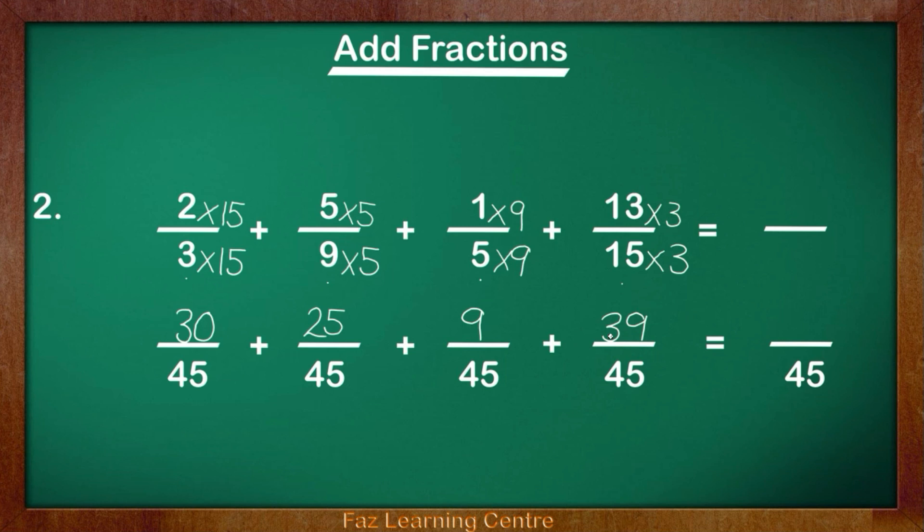We need to do a quick calculation to ensure that we have added these properly. So we can add 30 add 25 is 55. 55 add 9 will give us 64. 64 add 39, so 64, 74, 84, 94, and we add the 9. That will give us 103. So our answer is 103, and our answer is 103 over 45.